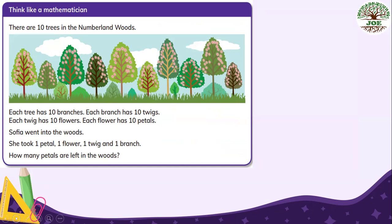This is the last part of this exercise. Think like a mathematician. And for this final question, you have to carry out with your partner or with groups. Let's look. So there are 10 trees in the Numberland Woods. Each tree has 10 branches. Each branch has 10 twigs. Each twig has 10 flowers. Each flower has 10 petals. Sophia went into the woods. And she took one petal, one flower, one twig, and one branch. How many petals are left in the woods?